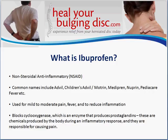The way that ibuprofen works is it actually blocks an enzyme called cyclooxygenase — I'm going to show you a picture of this in just a minute, so don't get freaked out by these big chemical words. Cyclooxygenase is an enzyme that produces something called prostaglandins, which are chemicals produced by the body during an inflammatory response and are responsible for causing pain. The theory with ibuprofen is that if you block that enzyme, it won't produce prostaglandins, and that's how a person experiences pain relief.